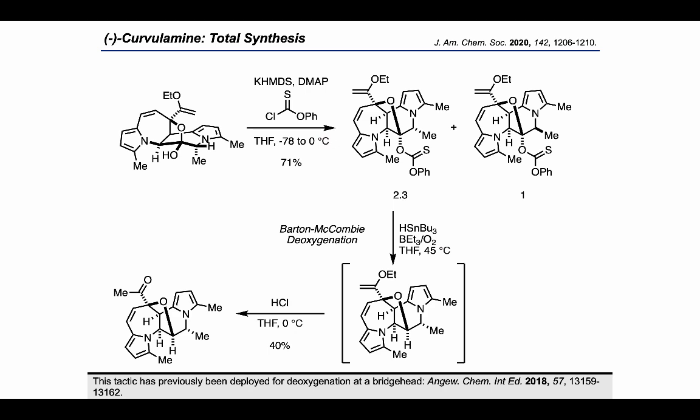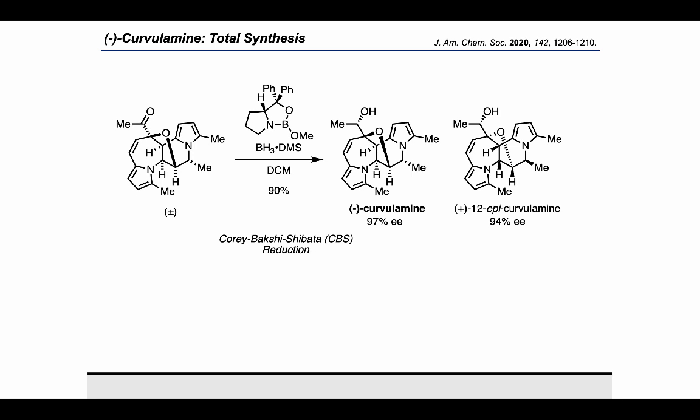Subsequent treatment with HCl converted the ethyl vinyl ether moiety into a methyl ketone. Finally, CBS reduction of the racemic mixture of starting materials gave selective reduction of each enantiomer from the top face of the ketone, which resulted in a stereodivergent reduction to arrive at highly enantioenriched curvulamine as well as 12-epi-curvulamine.